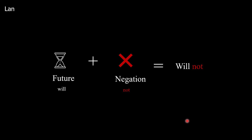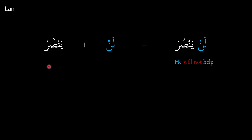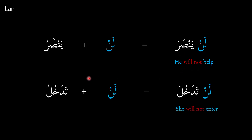The second is lan, which has a two-fold impact. First, it locks the present tense verb into the future with the meaning of 'will.' Then it negates it and adds the meaning of 'not,' giving the combined meaning 'will not.' So yansuru — 'he helps' or 'he is helping' — combined with lan becomes 'he will not help.' And tadkhulu combined with lan becomes 'she will not enter.'